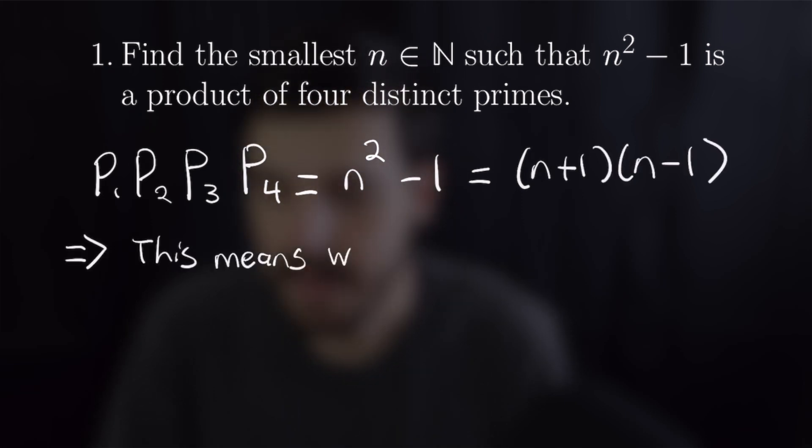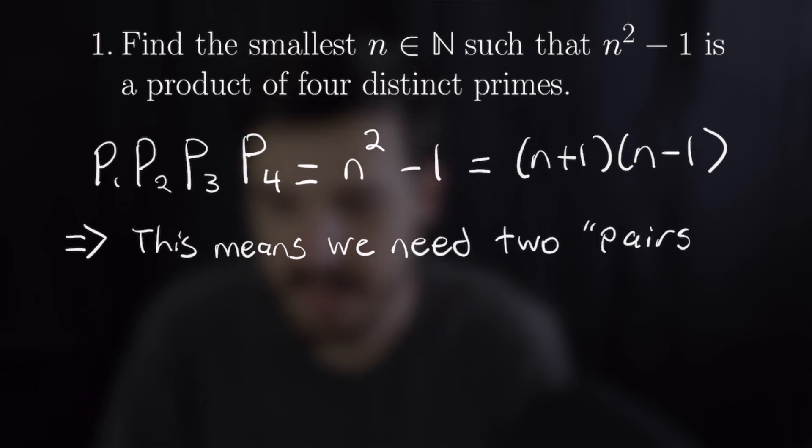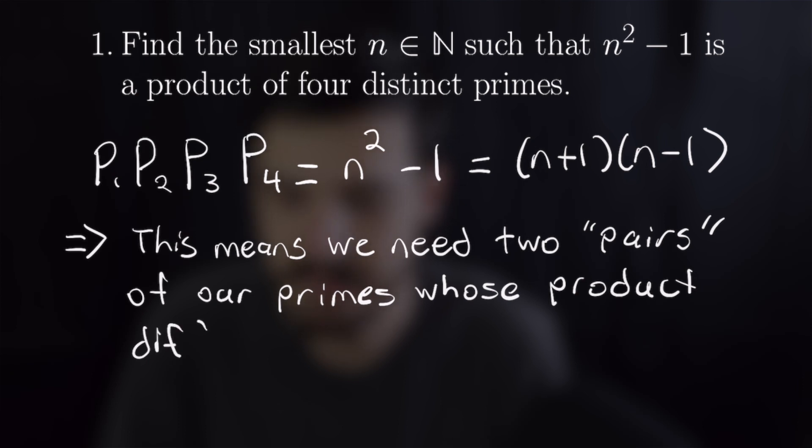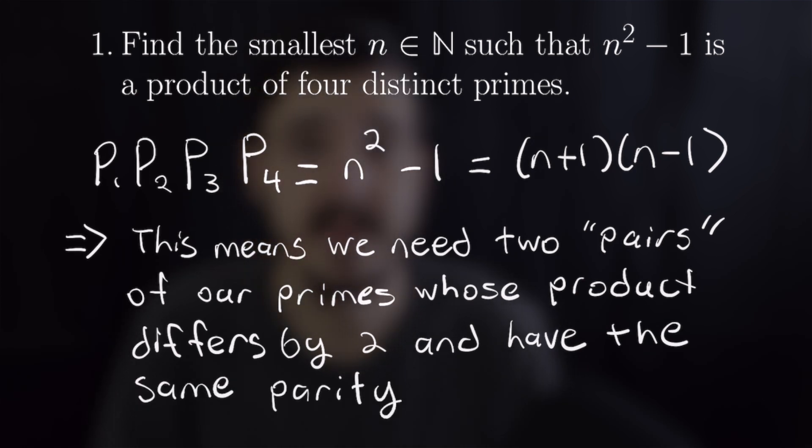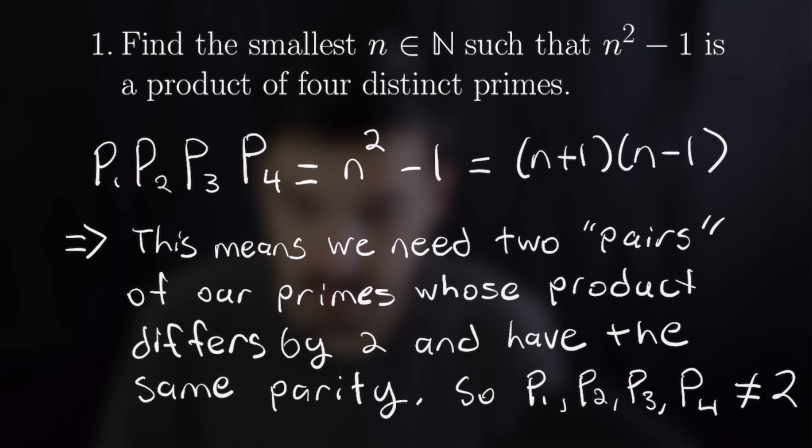This means we need to pair our primes together in such a way that the products of the pairs has a difference of two. That could be one prime is two off of the product of three primes or two and two or any kind of pairing that makes that happen. But we also know that these pairs have to have the same parity and that's because n plus one and n minus one will always have the same parity which means they have to both be even or both be odd but they can't both be even in this case because there's only one even prime. So that means that we know we're working with odd primes here.